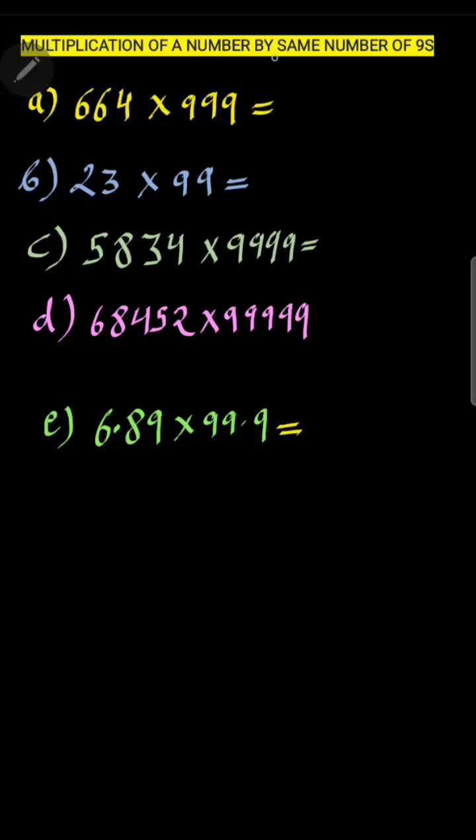The meaning of the title is that if you want to multiply a three digit number, then in the other number you must have three nines. Similarly, if you want to multiply a two digit number, then you must have two nines in the other number.